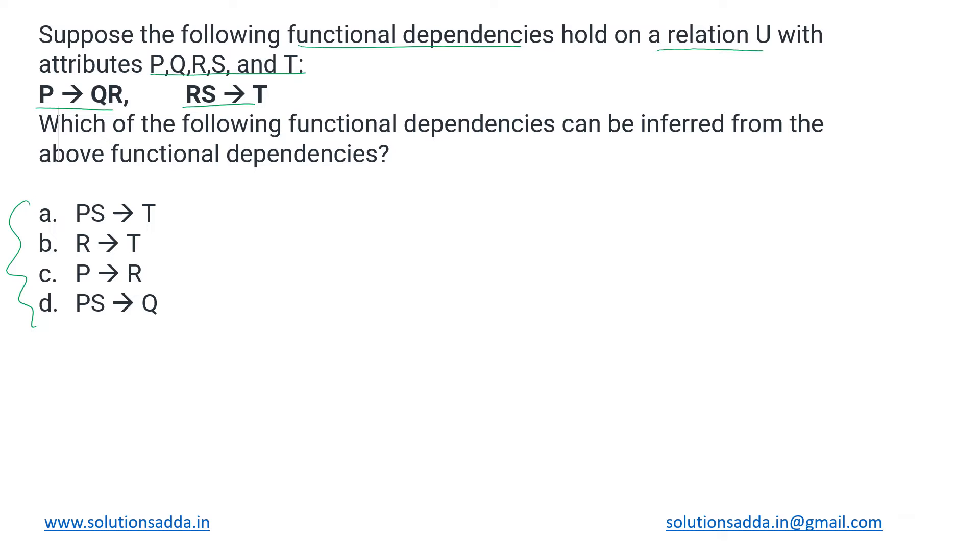For this, we can start with getting the closure of all the attributes from this relation. P derives QR can be decomposed into P derives Q and P derives R separately. Similarly, the next FD which we are having, RS derives T, for this we cannot decompose it like R derives T and S derives T because they are both collectively deriving T.